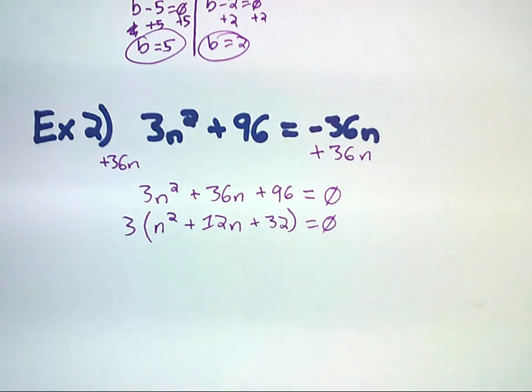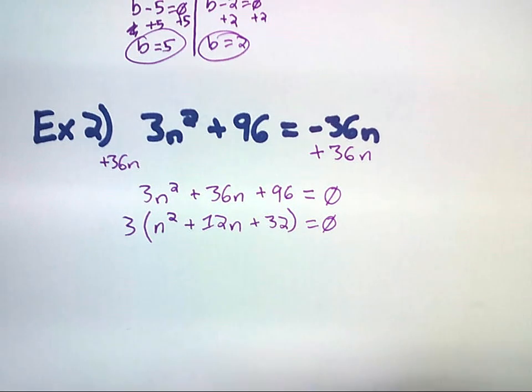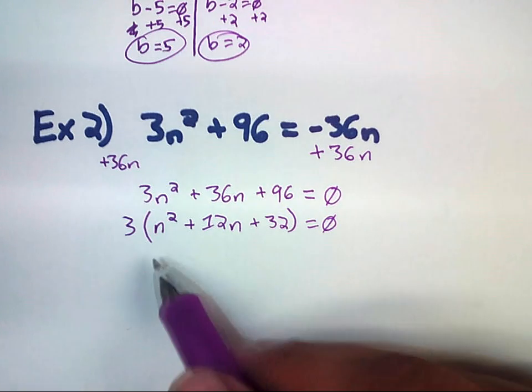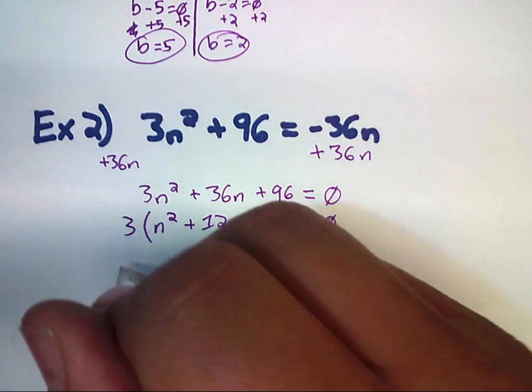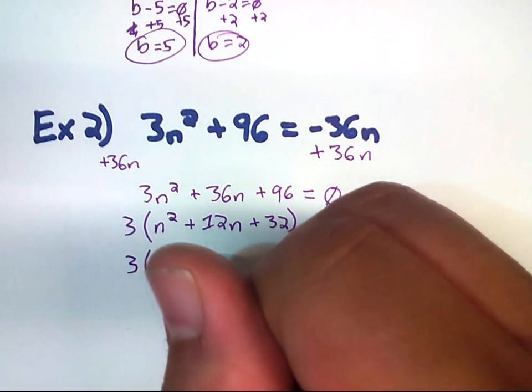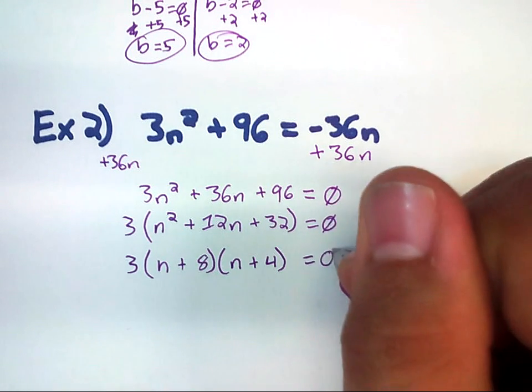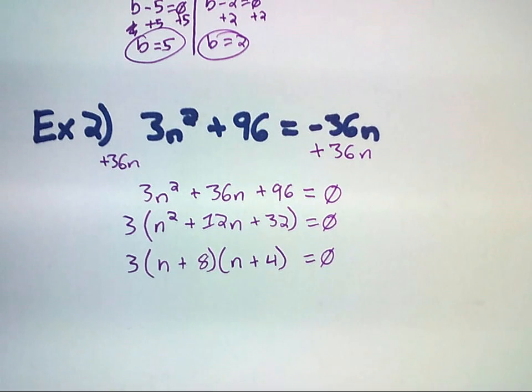Now, you might think this comes into play a little bit later when we're solving for the roots, but it actually really doesn't. We are going to factor this. And if we do that, it should work out to n plus 8, n plus 4 still equal to 0. If you don't believe me, you can go ahead and make the table and check my work.